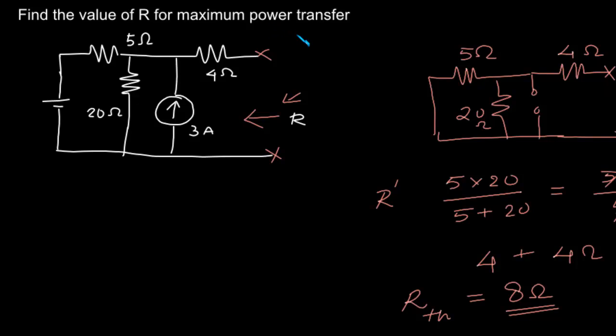For maximum power transfer, the value of resistor that we must put across these two terminals must be equivalent to the Thevenin resistance looking into that terminal.